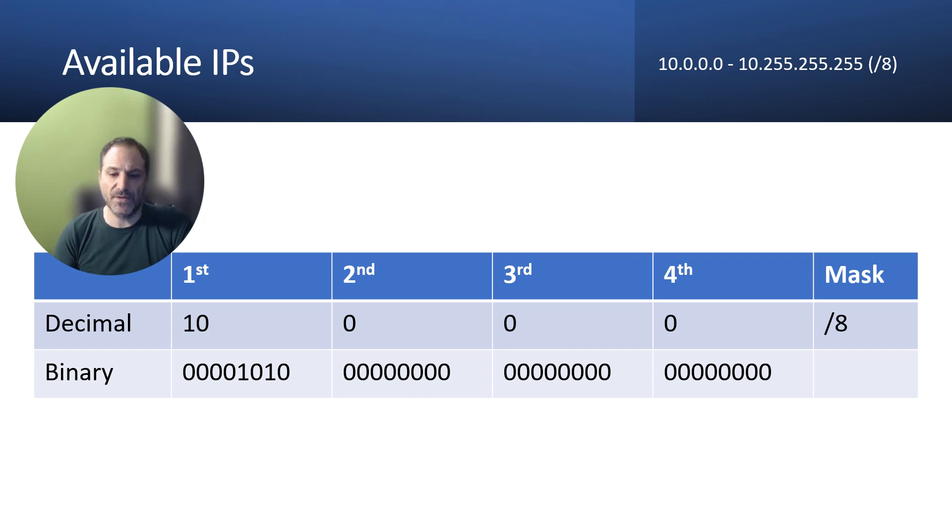The size of the segment you're using is represented by the slash here. How many bits you're reserving for the network. That will split your representation in two. It will be on the left the network and on the right of that marker your host.